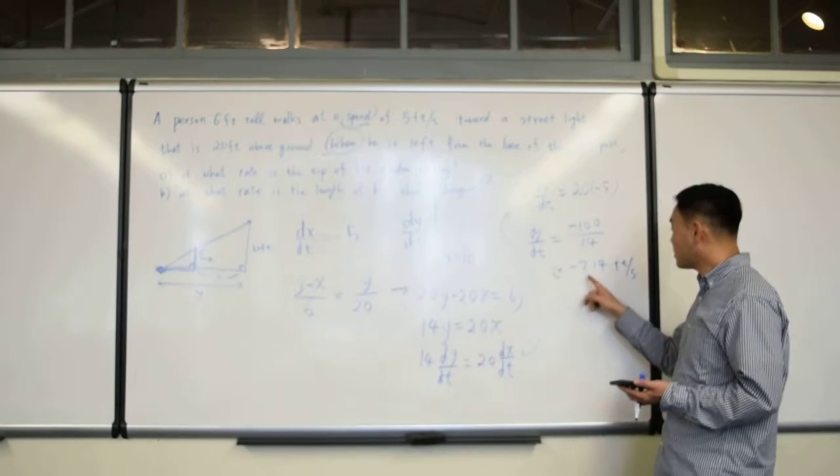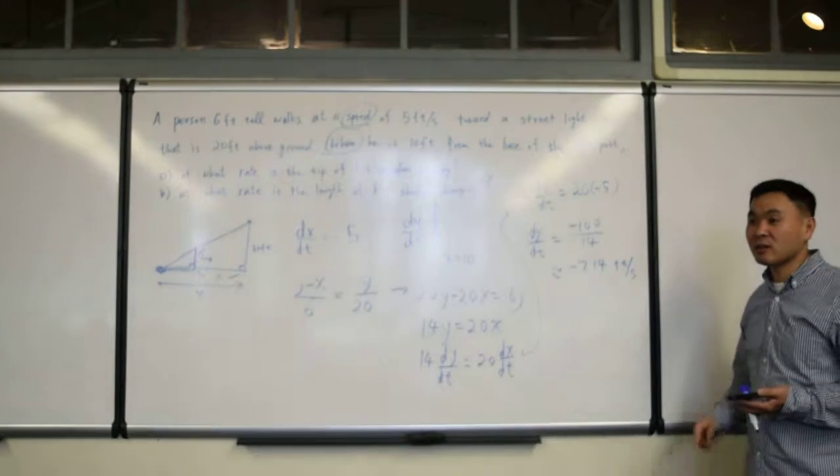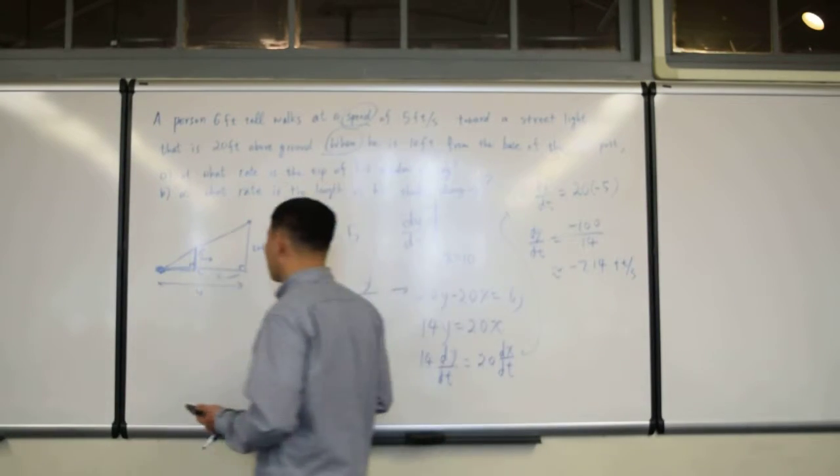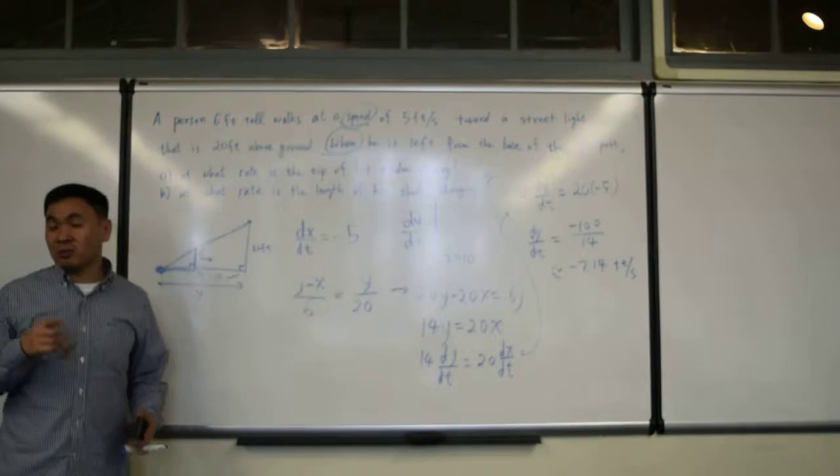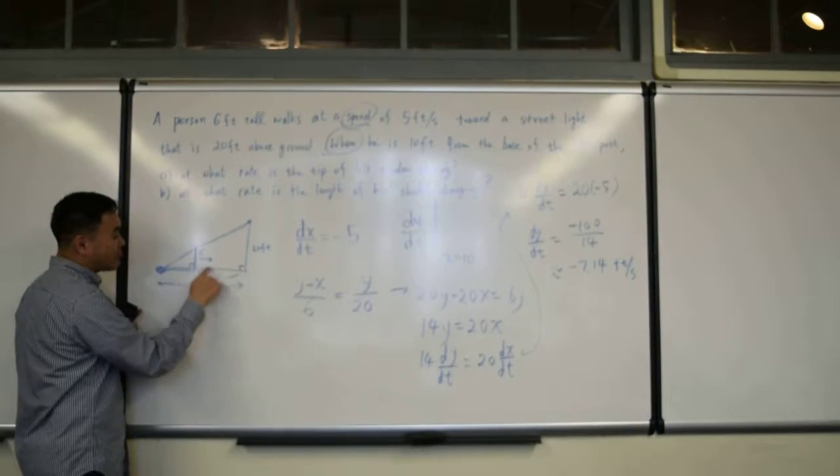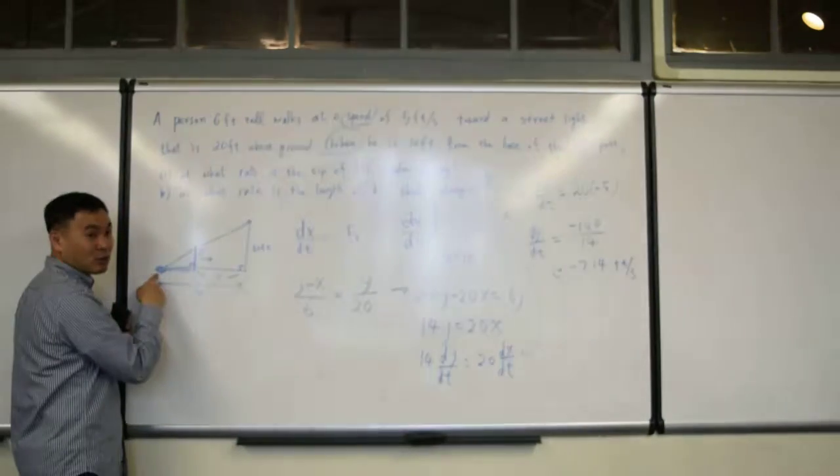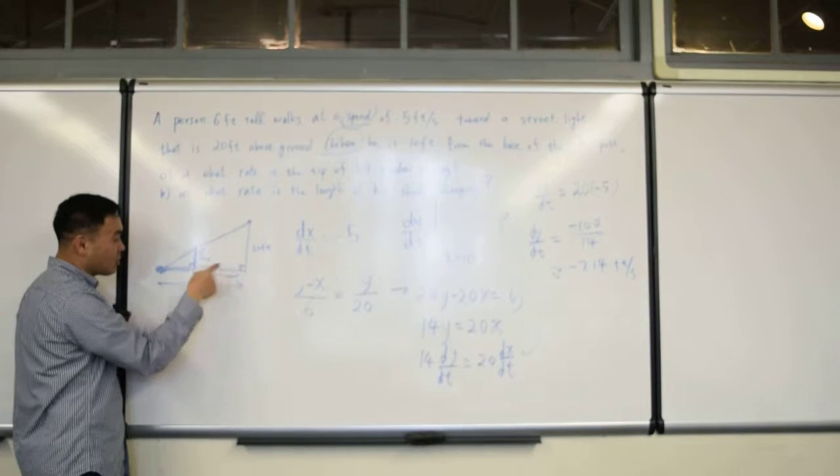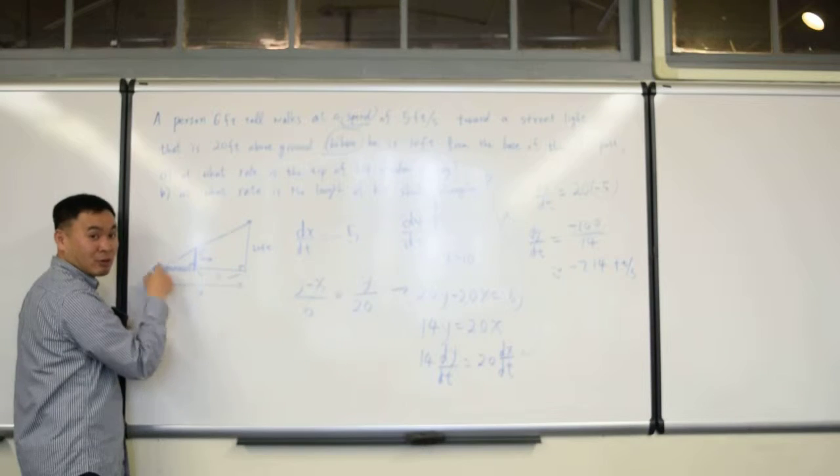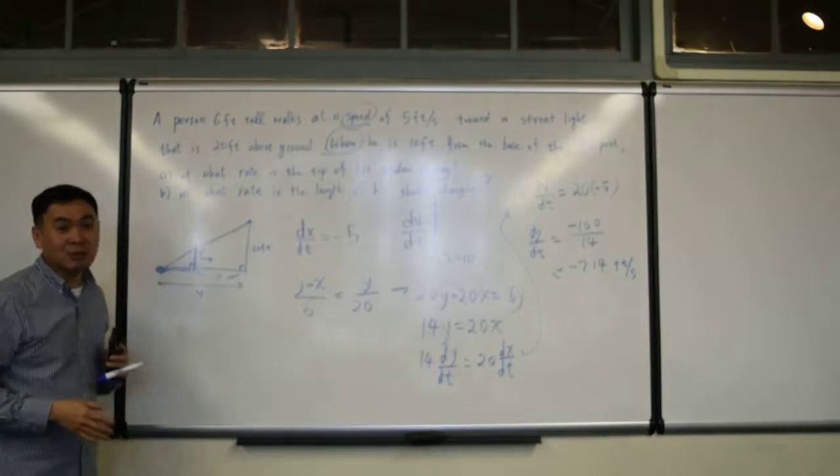Now, you can see that the speed of the tip of the shadow is faster than the man walking, right? Do you think this makes sense? That's because, think about the extreme case. When this man is right under the light, the shadow has to be zero, right? So, this x has to become - when x is equal to zero, y also becomes zero. So, the shadow has to go from here to there in the same period when the man goes from here to there. So, the shadow has to cover more distance within the same time. Therefore, it should have faster speed.